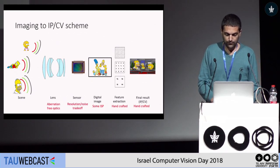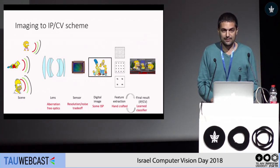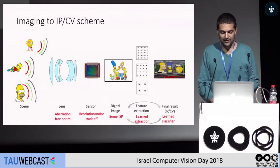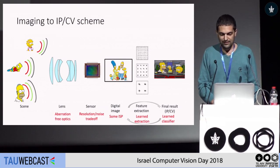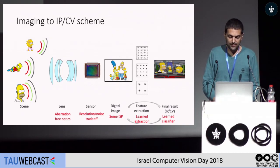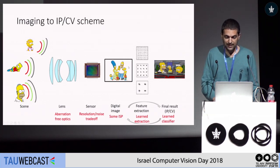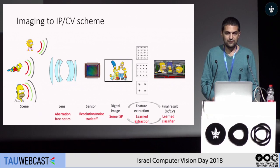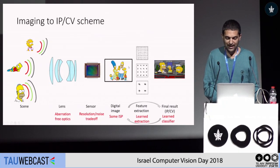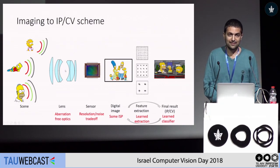In traditional computer vision, we're using handcrafted features and handcrafted algorithms. Then when deep learning came, instead of using handcrafted features, we got the classifier and the features being learned at the same time. From the digital image, we would get the final result directly using a neural network. The question I want to ask today is whether we can go beyond that — whether we should stop with deep learning at the image, or whether we can go to the sensor and to the lens level.